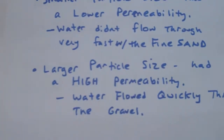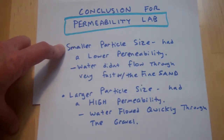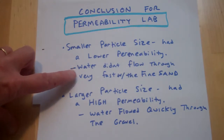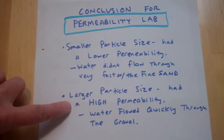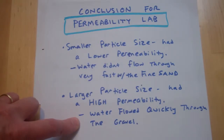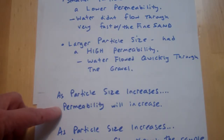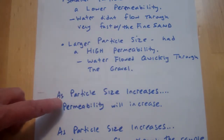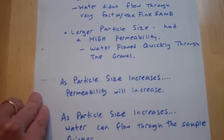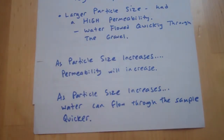Our conclusion for the permeability lab: smaller particle size had lower permeability — water didn't flow through fine sand very fast. Larger particle size, like gravel, had high permeability — water flowed really quickly. So as particle size increases, permeability also increases. The water can flow through large gravel quickly; as particle size increases, water flows through the sample quicker.